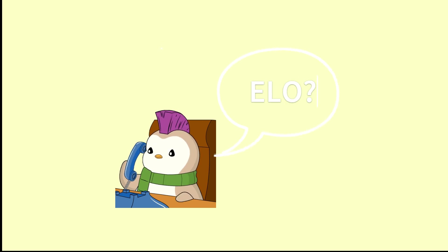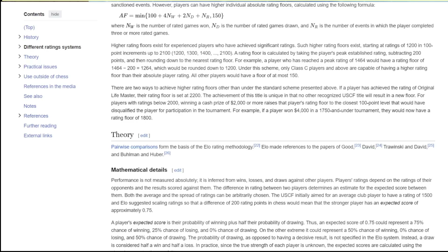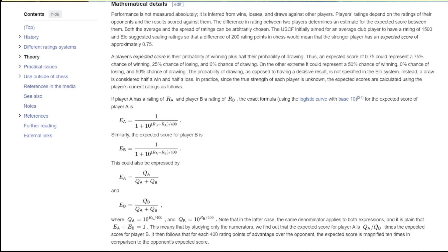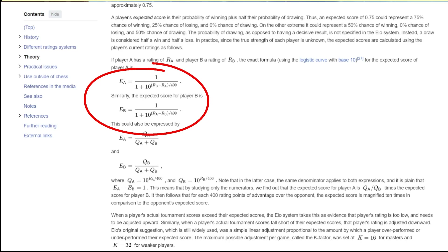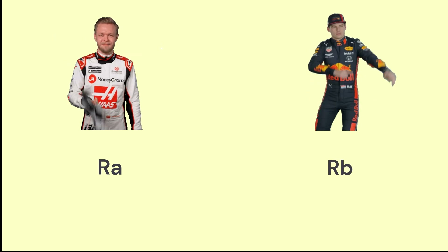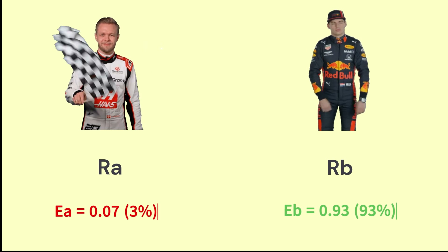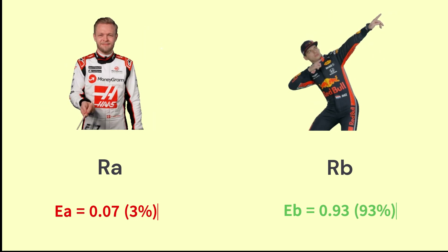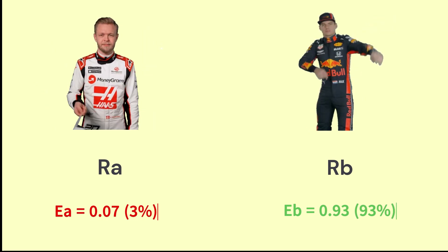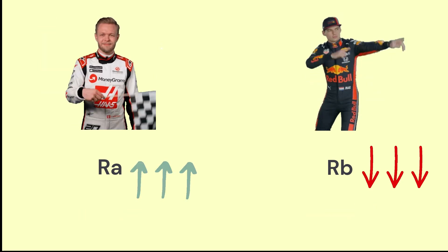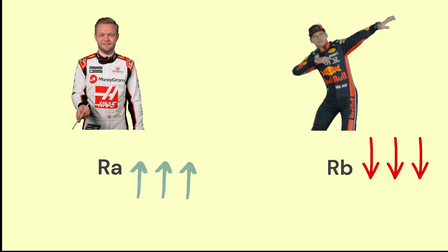Imagine each driver has a score — a rating that changes based on their race outcomes. Before any matchup, the ELO system predicts the outcome using this formula. Let's say drivers A and B are going head-to-head. Each has their own current rating: RA for driver A and RB for driver B. The system calculates expected scores EA and EB, predicting how likely it is for each driver to win. Now the race happens, and if driver A wins, their score goes up; if they lose, it goes down.